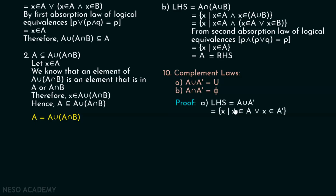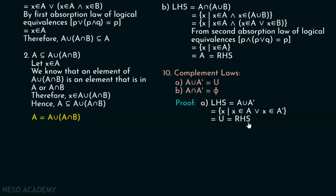The LHS is A union A complement. We can write this as the set of all X such that X belongs to A or X belongs to A complement. This is nothing but the universal set, because the universal set definition says that either X belongs to A or X belongs to A complement — that is everything. Therefore, this set is equal to the universal set, and hence LHS is equal to RHS.